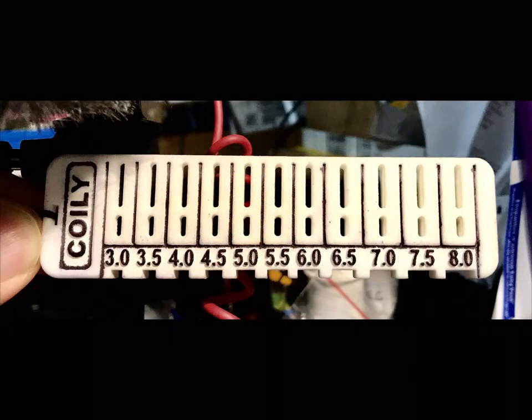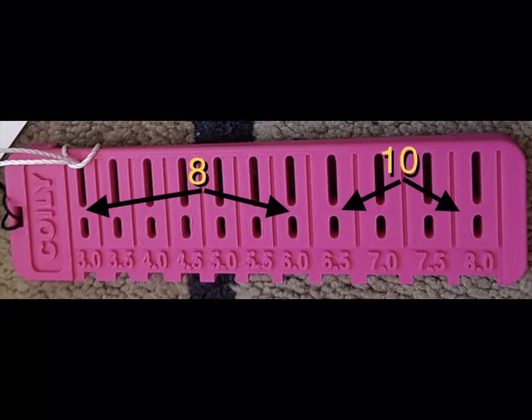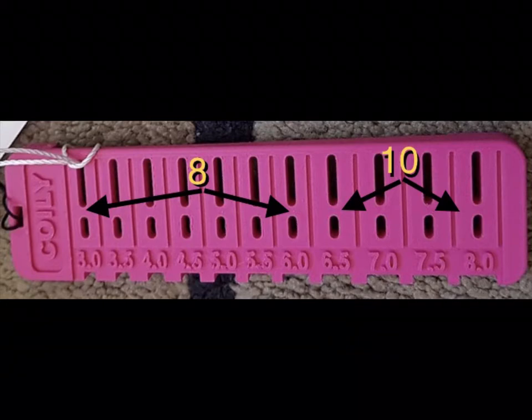That is the intended use of the Coily, but the Coily has many edges, gaps, and measurements we can also use. For instance, the width between the separations between the coil leg slots—those between 3.5 and 6 millimeter notches are all 8 millimeters apart. The remaining ones between the 6.5 and 8 millimeter notches are 10 millimeters wide.